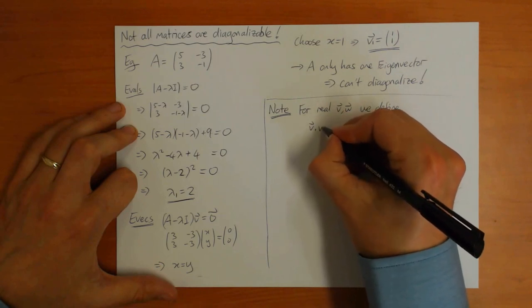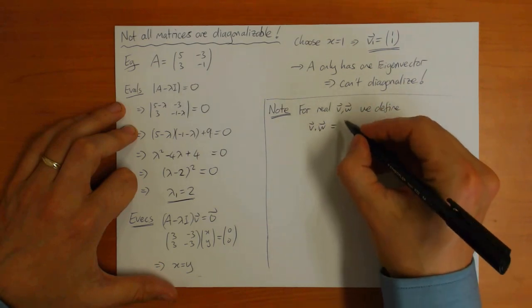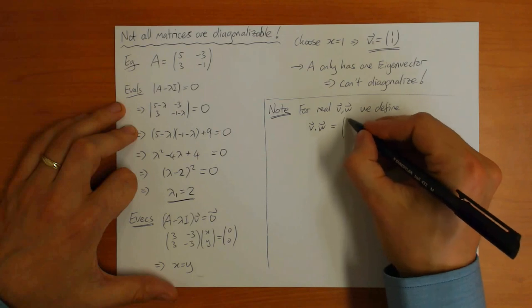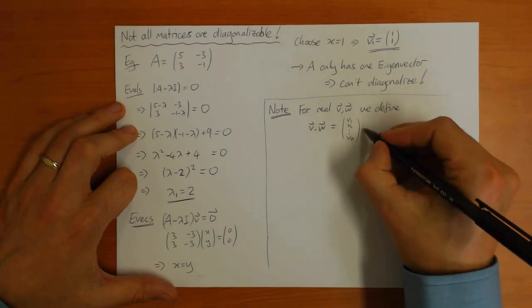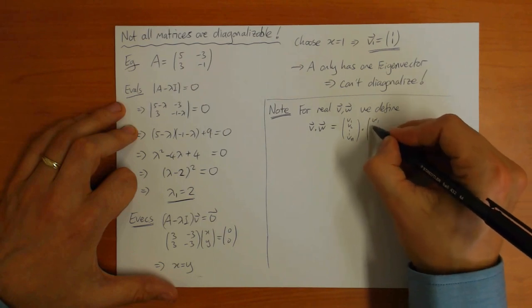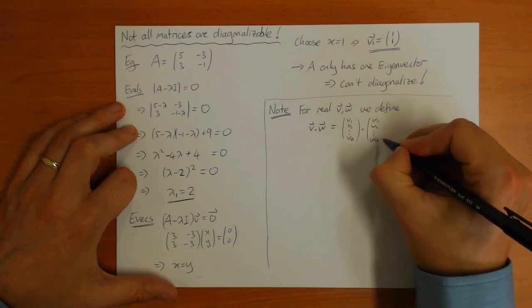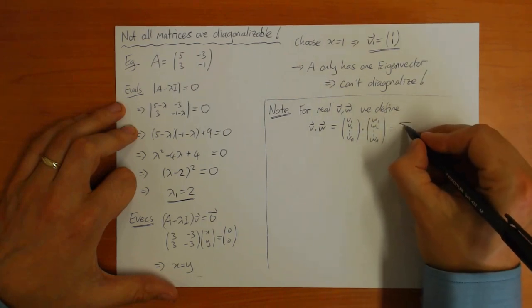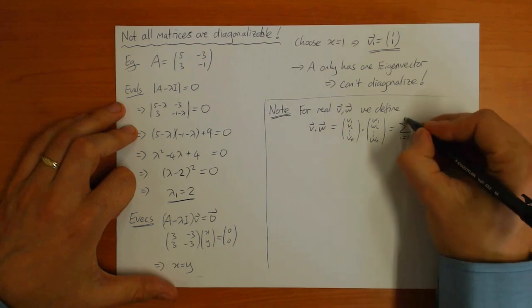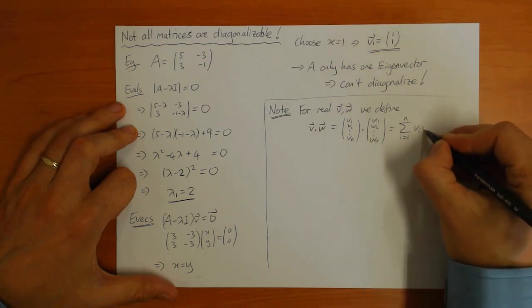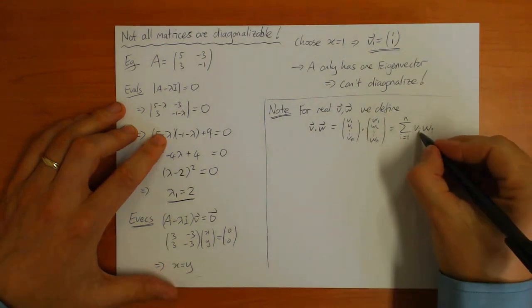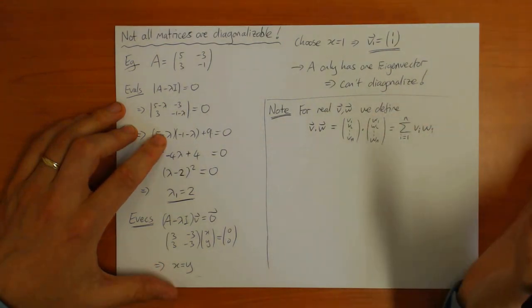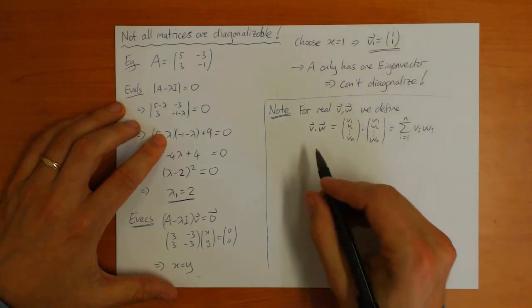Before I'm going to state the theorem about those special matrices, let me define the vector dot product. V dot W - if the vector is V1, V2, up to Vn, and W1, W2, up to Wn, this is defined as the sum i goes from 1 to n of Vi times Wi. This is the definition we saw in the lecture on vectors a few weeks ago.